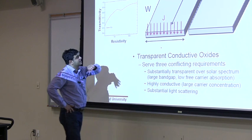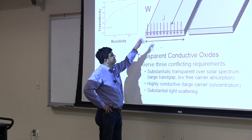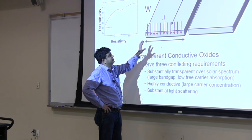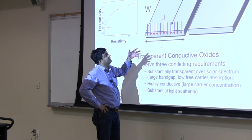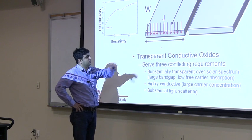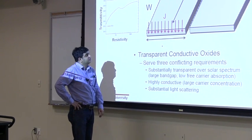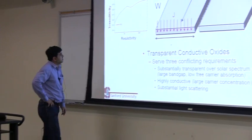And these are all conflicting requirements, because if something is transparent, that typically means it doesn't have free carriers. So it means that it should not have good conductivity. But you want it to be transparent over the spectrum but still have good conductivity. So these are all conflicting requirements.